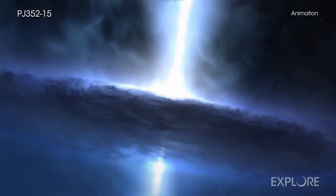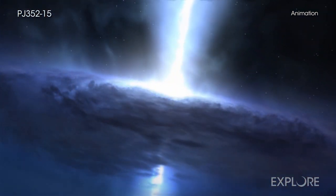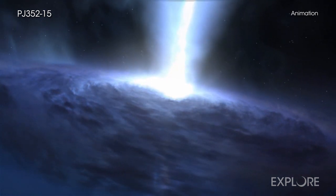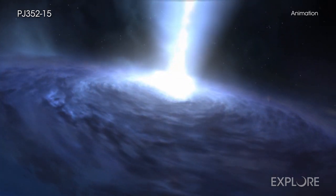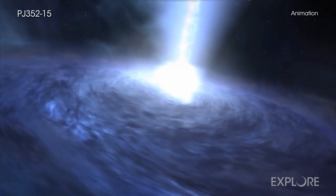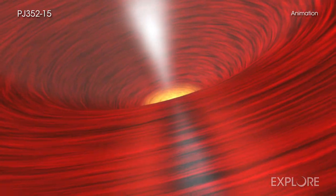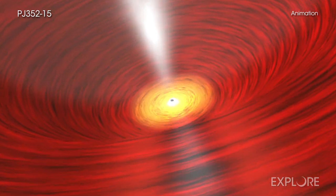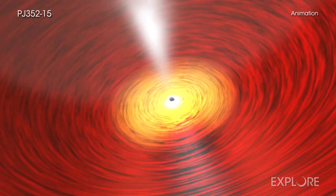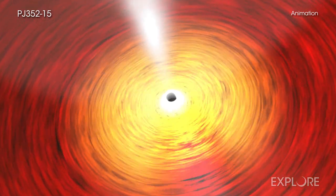Despite their powerful gravity and fearsome reputation, black holes do not inevitably pull in everything that approaches close to them all at once. Material orbiting around a black hole in a disk needs to lose speed and energy before it can fall farther inwards to cross the so-called event horizon, the point of no return.